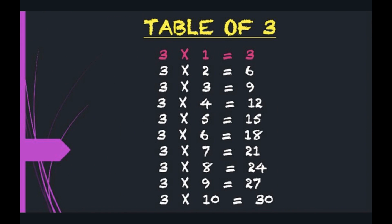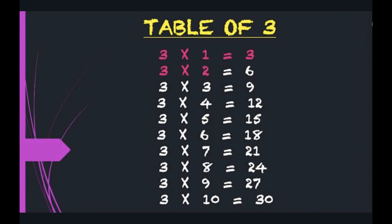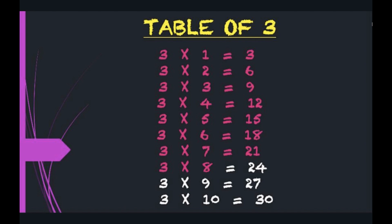Three 1s are 3. Three 2s are 6. Three 3s are 9. Three 4s are 12. Three 5s are 15. Three 6s are 18. Three 7s are 21. Three 8s are 24. Three 9s are 27. Three 10s are 30.